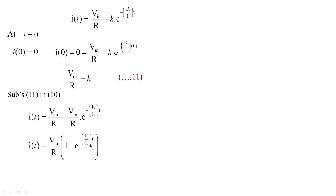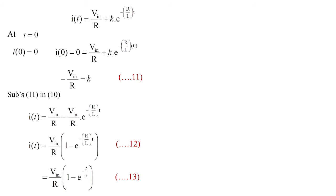This is the expression for an exponential curve. Taking the time constant tau = L/R, we can reframe the equation as i(t) = (V_in/R)·[1 − e^(−t/tau)], where tau = L/R is known as the time constant for the RL circuit. These are equations 12 and 13 — please remember them for future classes.